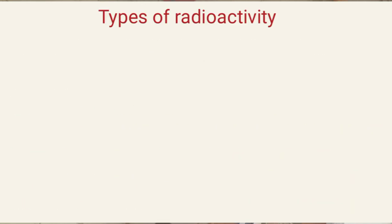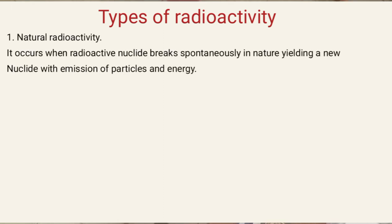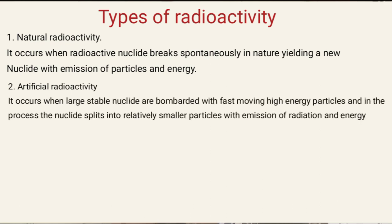We need to know the types of radioactivity. Mainly, there are two types. Number one is natural radioactivity, which occurs when a radioactive nuclide breaks spontaneously in nature, yielding a new nuclide with emission of particles and energy. Number two is artificial radioactivity, which occurs when large stable nuclides are bombarded with fast-moving high-energy particles, causing the nuclide to split into relatively smaller particles with emission of particles and energy.